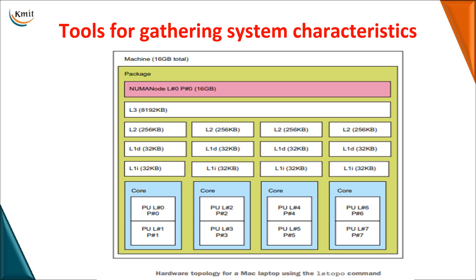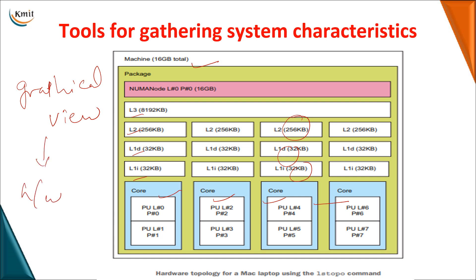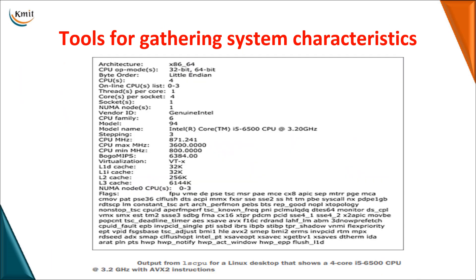Before executing an application, you want to know the system's configurations — how well the system will work. This is a graphical view of a Linux system showing the different levels of cache memory available, how many cores are present, and the capacity at each level. You can obtain this graphical hardware overview using lstopo on a Linux system. If you want the system details as a text view, that can be done using lspci, which shows the architecture, CPU register bit-width, number of cores, and memory configurations in detail.